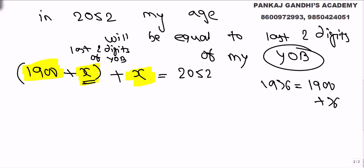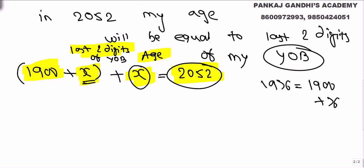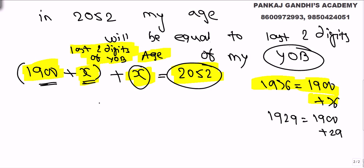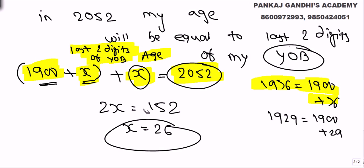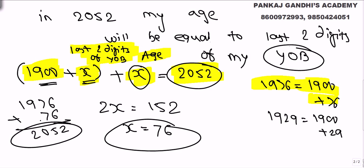In 2052, my age will be equal to x, and x is the last two digits of my year of birth. So, year of birth is 1900 plus x, and age is x. Therefore: (1900 + x) + x = 2052, giving us 2x = 152, so x = 76. I was born in 1976, and in year 2052 my age will equal the last two digits of my year of birth.